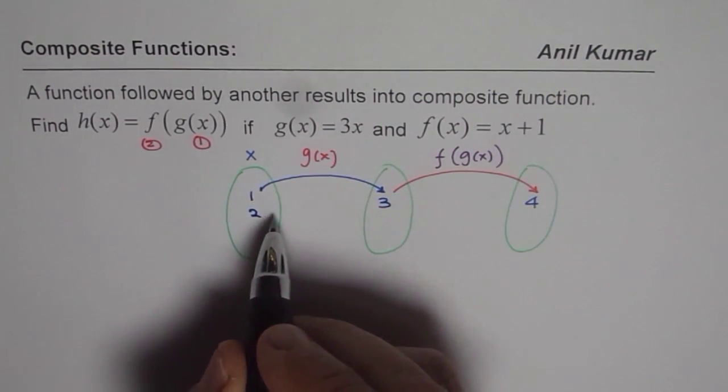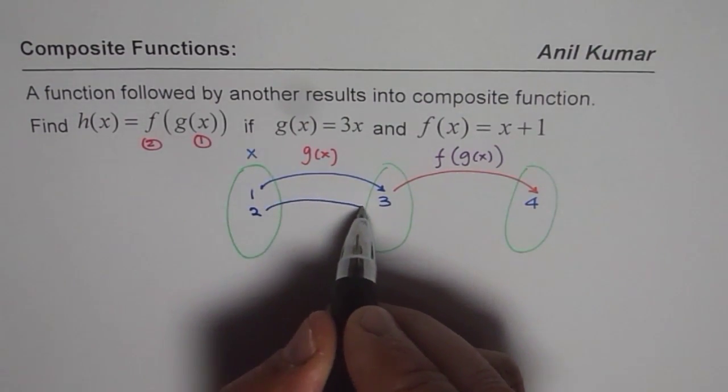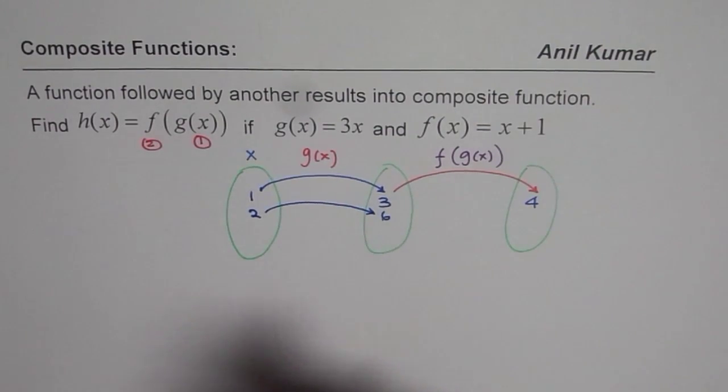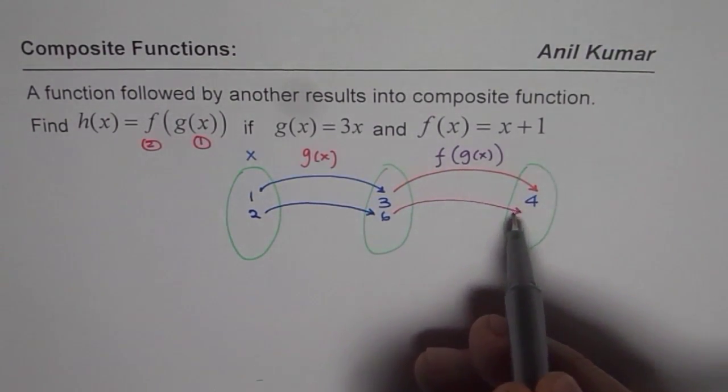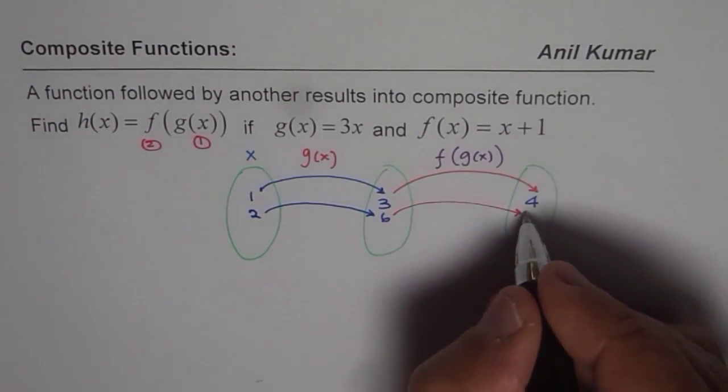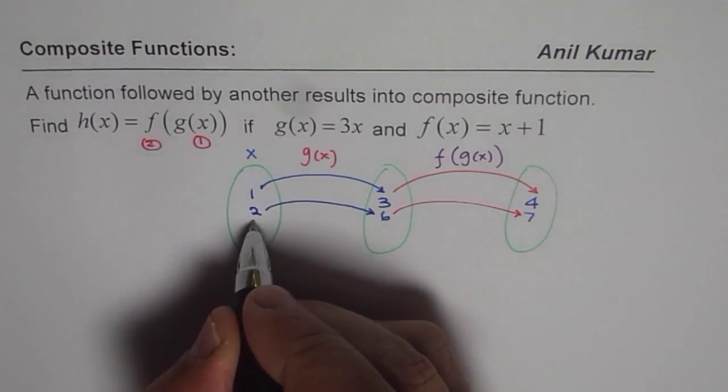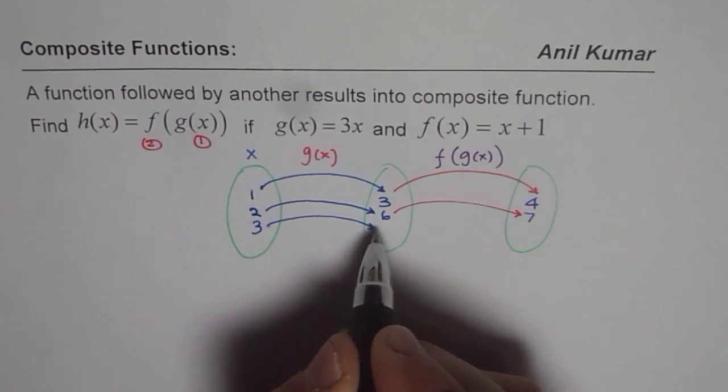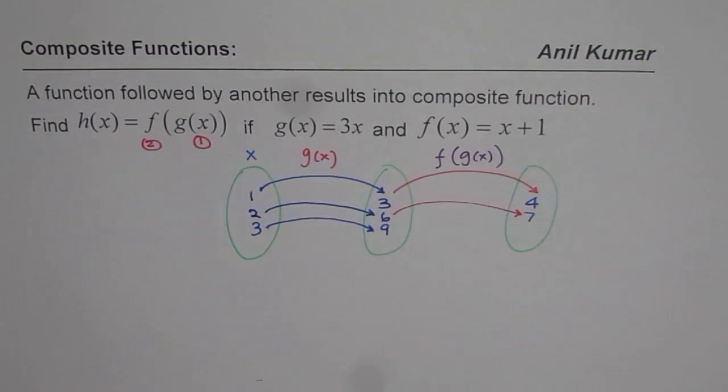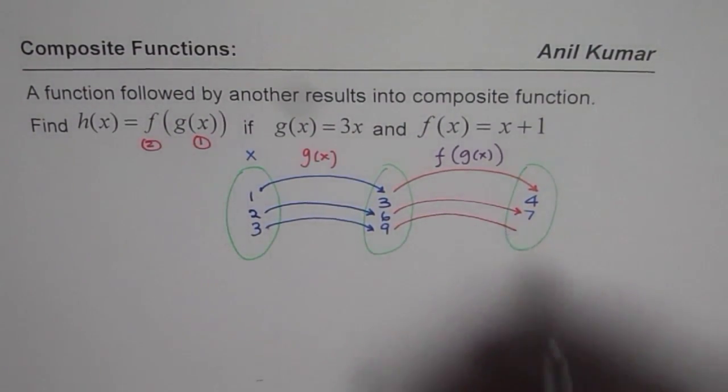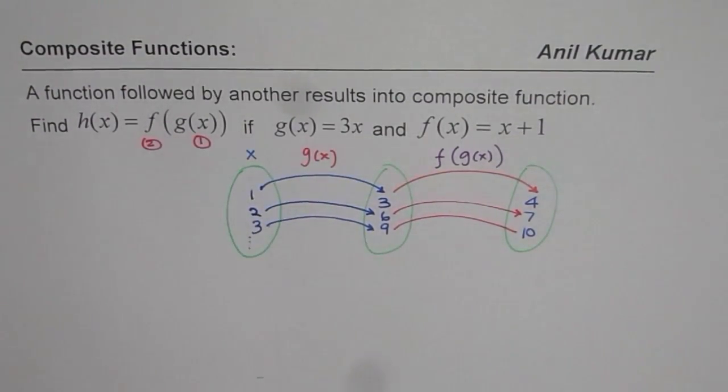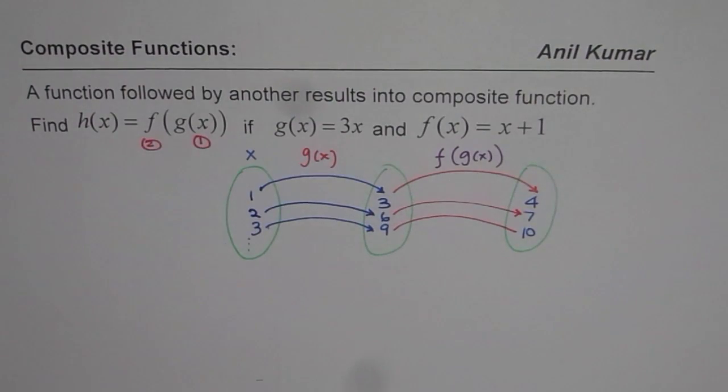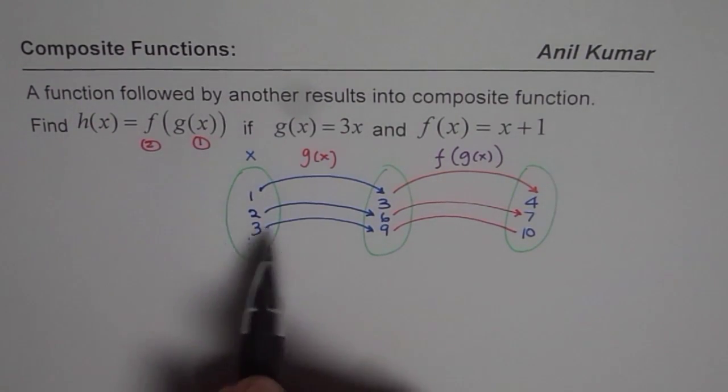If I write 2 here, then 2 times 3 results into 6, and if you add 1 to 6, you get 7. Similarly, you can have 3. 3 times 3 results into 9, and when you add 1 to 9 you get 10. Likewise you can continue. So you have one operation after the other.